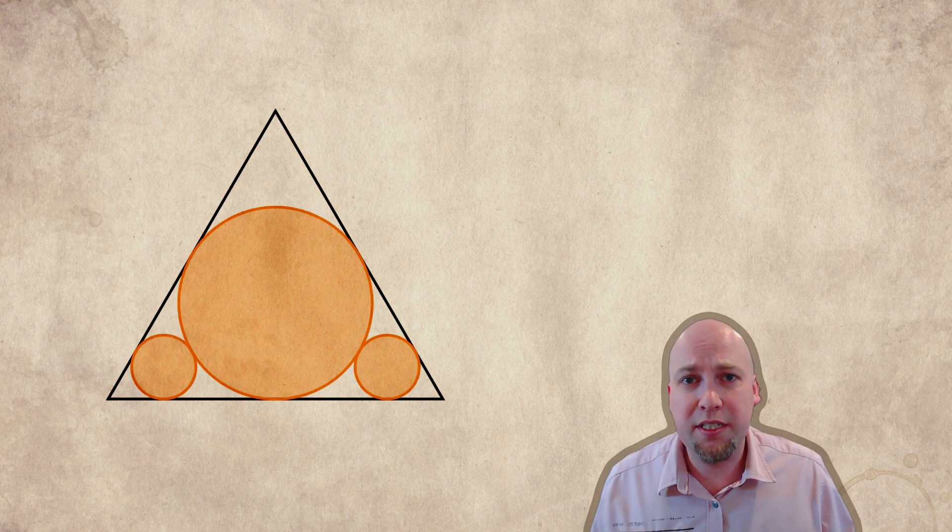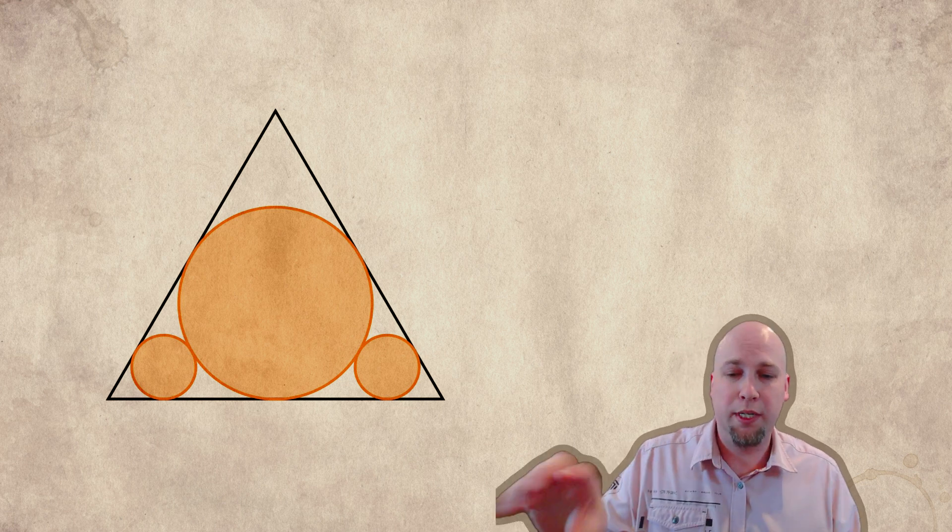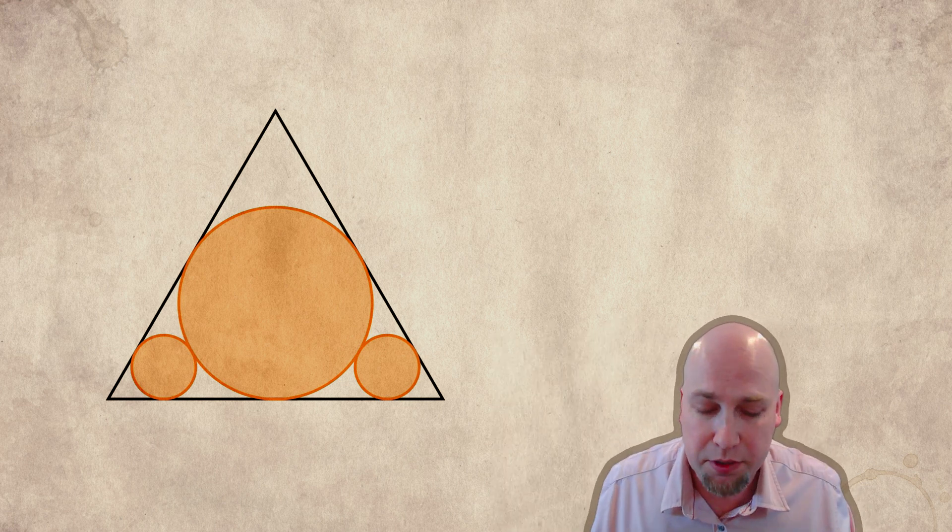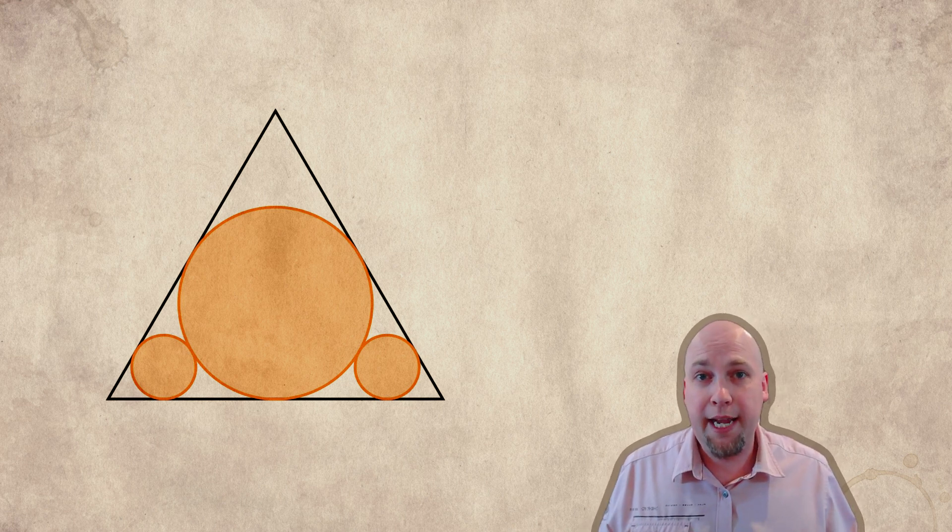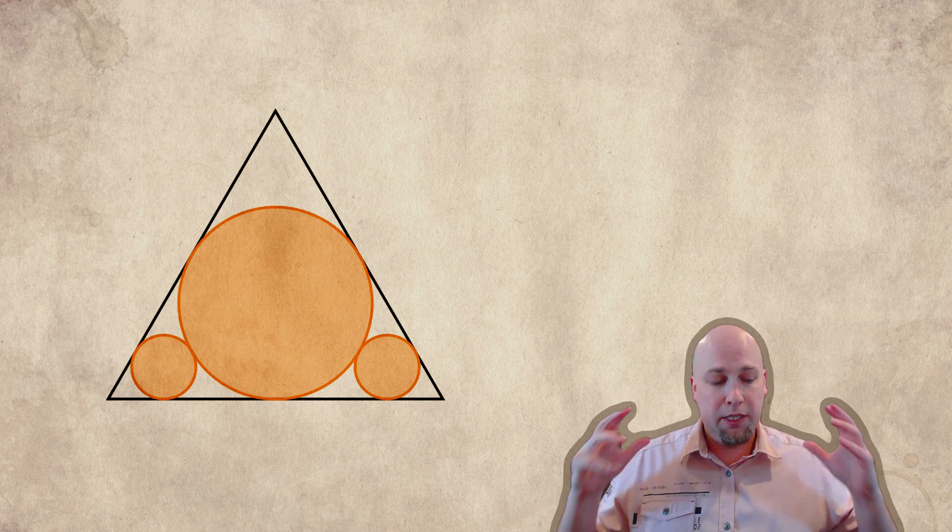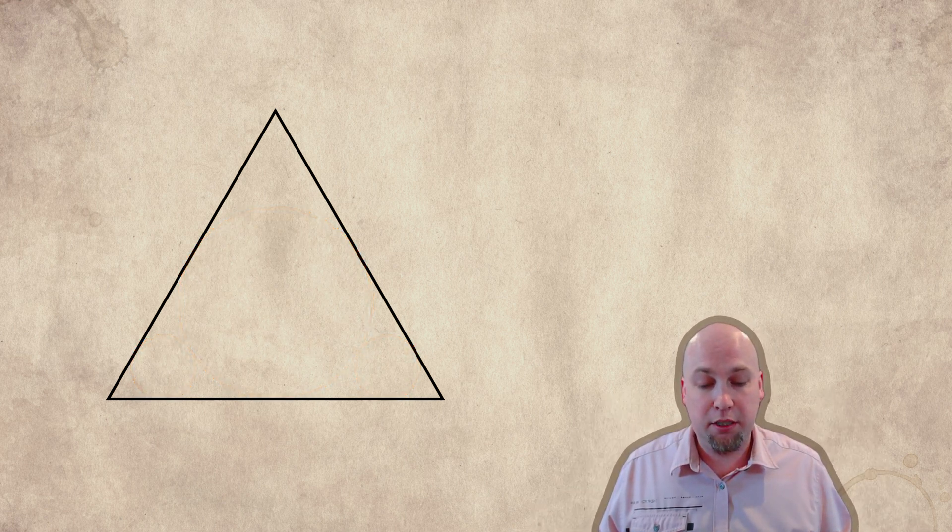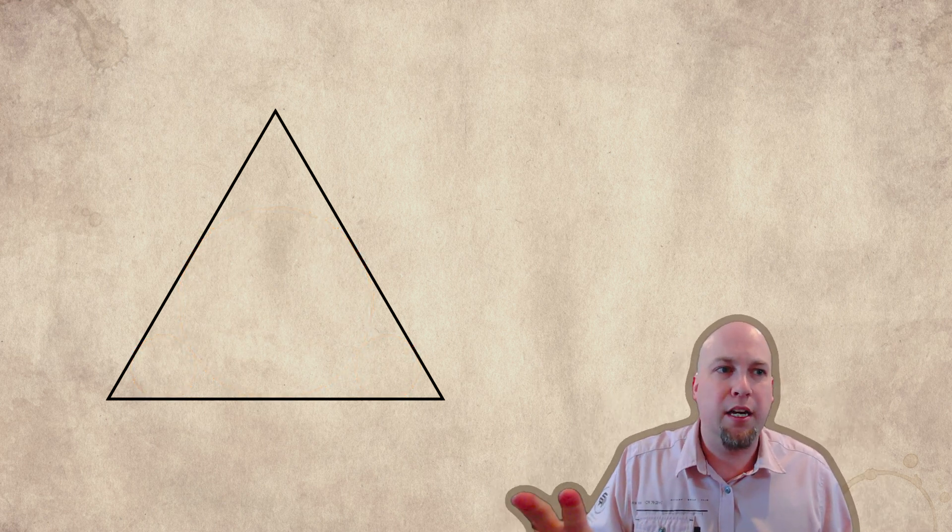So let's talk about this optimal configuration of circles here. This one that has a large circle and then two smaller circles beside it. This configuration is what we call greedy. Because one way you can think about it is when we want to place three circles inside this triangle as large as possible, well, just place them one at a time.